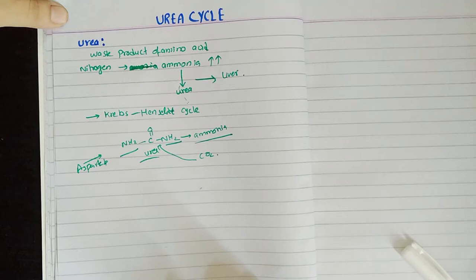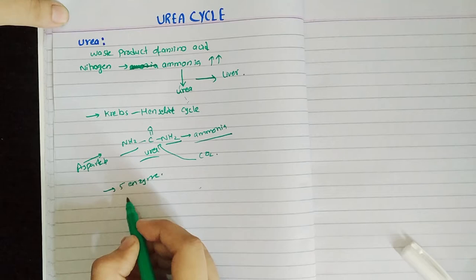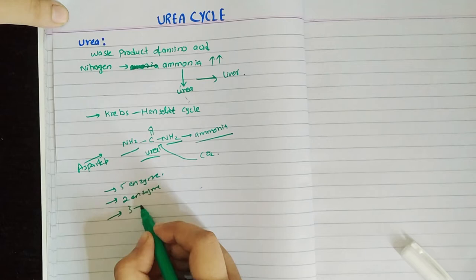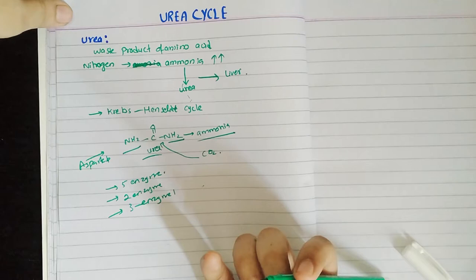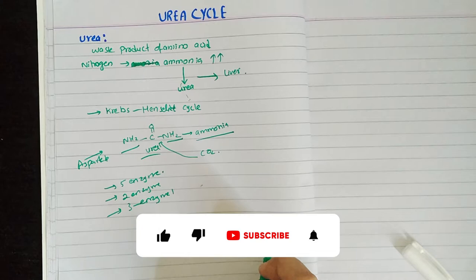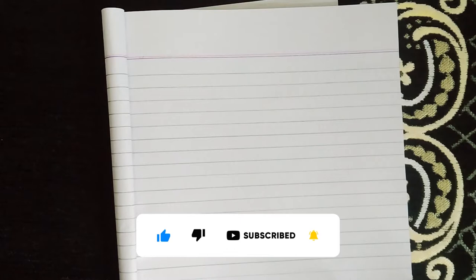There are 5 enzymes used in this cycle. Two distinct enzymes are used in the mitochondria, and the rest of the enzymes are present in the cytosol. The enzyme and synthesis are present in the liver. There are 5 steps to complete the Urea Cycle.